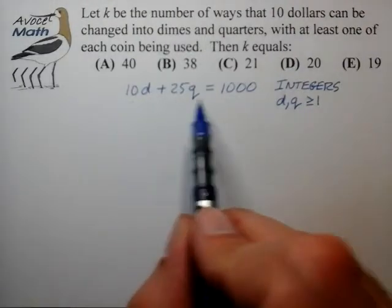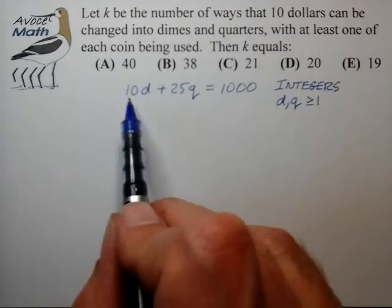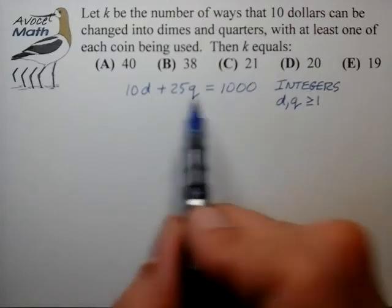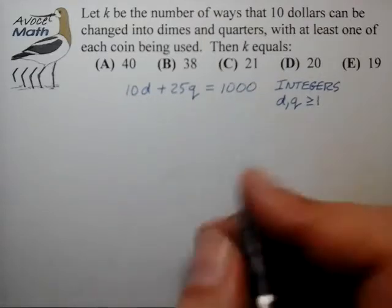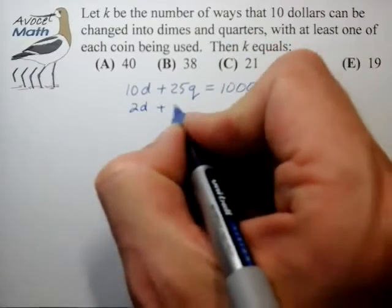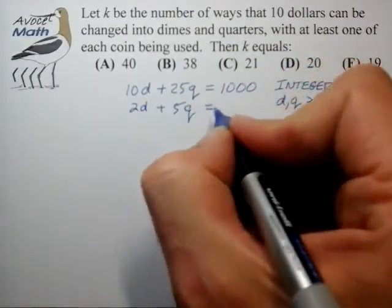One thing we first notice is that we have coefficients and the constant term on the right side, all divisible by five. So step one, let's divide out by that common factor of five.